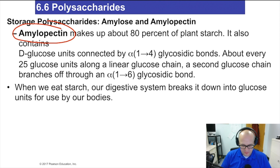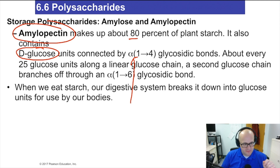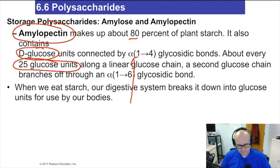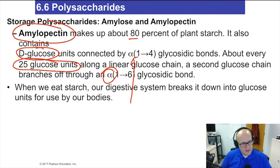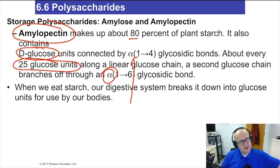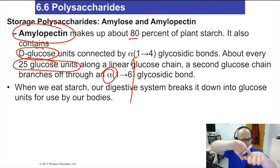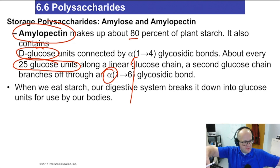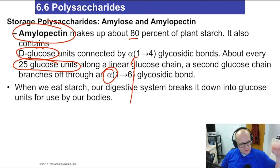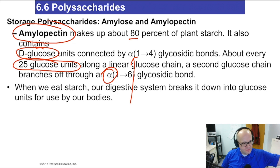Amylopectin is 80% of all plant starch, and it also contains D-glucose, again all bonded with alpha-glycosidic bonds. Now, about every 25 glucose units you're going to get what's called a branching point. At that branching point, another alpha-glycosidic bond will form and another whole row of glucose will start to form right there. So you'll have a branching molecule — amylose going one way, then branching off another way, then branching again. It's a very complicated, huge molecule — just glucose after glucose after glucose bonded together, some in straight lines, some branching off.